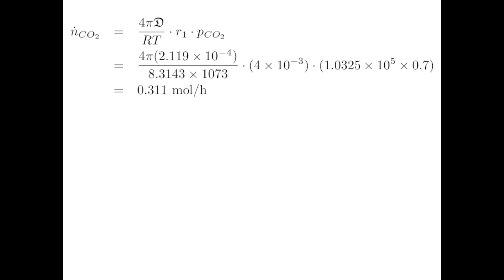For the partial pressure of CO2, we need consistent units in pascals: 1.0325 × 10⁵ Pa/atm × 0.7 atm. Our value expressed in moles per hour is 0.311 mol/h.